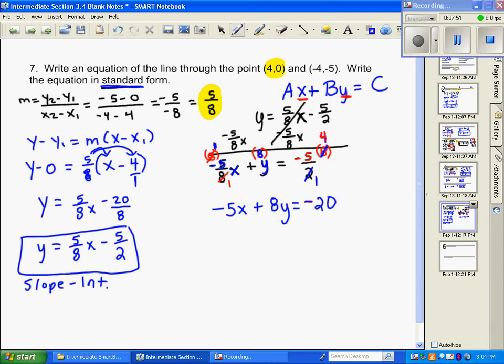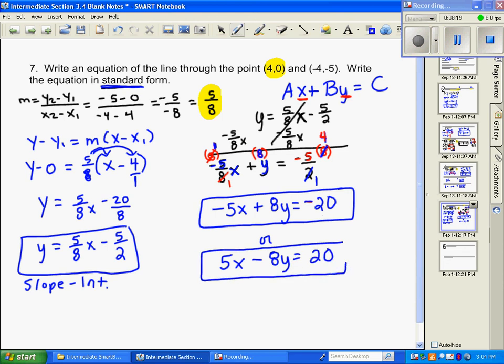Some standard forms let you leave your answer like this. And if you can't find this answer as one of your choices, then what they may do is multiply through by a negative one. So that's your a value. Remember, our a value is the one with the x is not negative. So if that's the case, you just multiply through by a negative one and it changes all the signs. So it would be 5x minus 8y equals 20. So for standard form, you will have one of these answers depending on how particular it is about the a value being positive or negative.